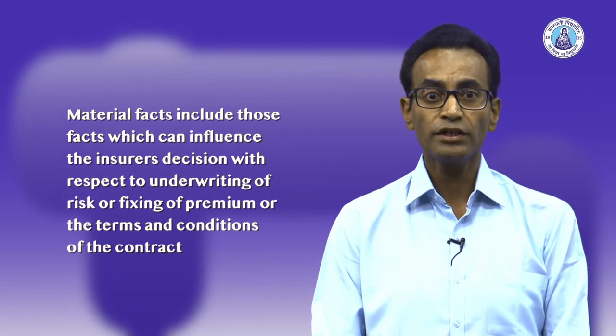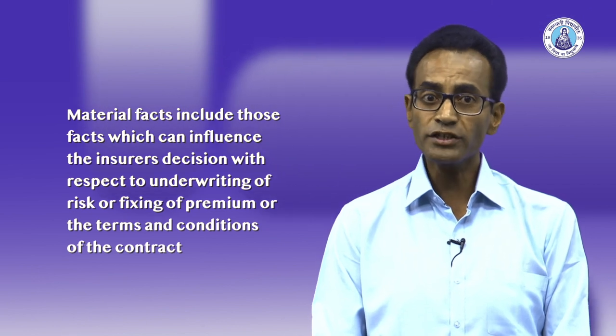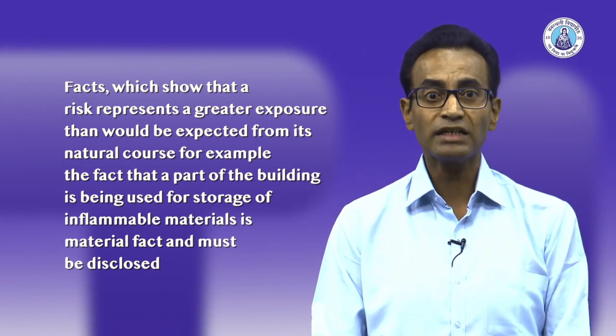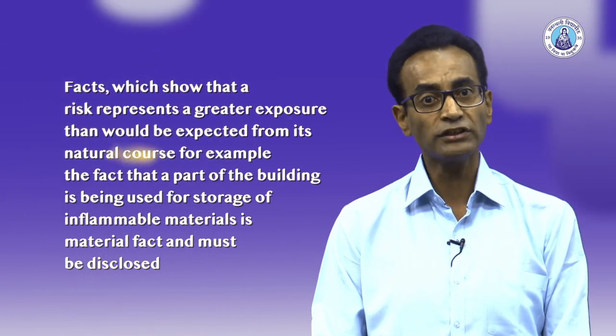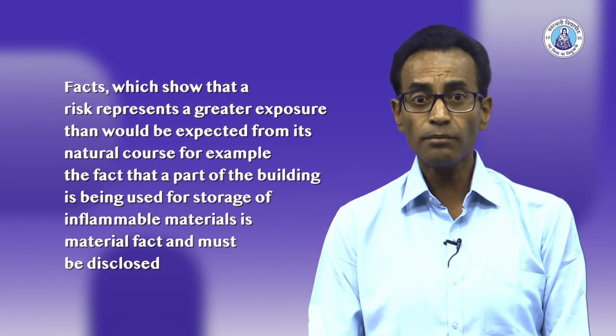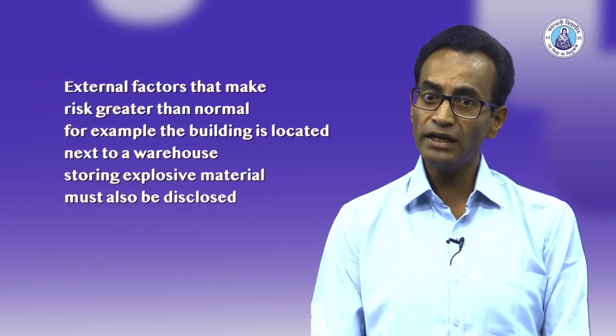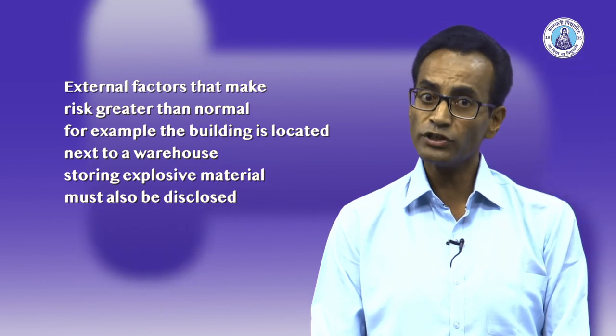The question arises: what is the scope of material fact? Material fact includes those facts which can influence the insurer's decision with respect to underwriting of risk, fixing of premium, or the terms and conditions of the contract. Facts that should under all circumstances be disclosed include facts which show that a risk represents a greater exposure than would be expected from its natural course. For example, the fact that a part of a building is being used for storage of inflammatory material is a material fact and must be disclosed. Similarly, external factors that may make risk greater than normal — for example, the building is located next to a warehouse storing explosive material — must also be disclosed.